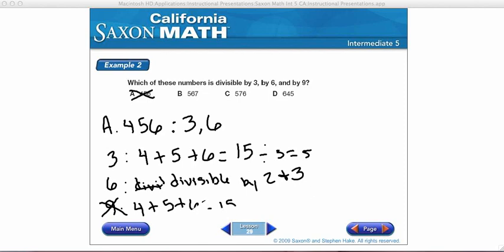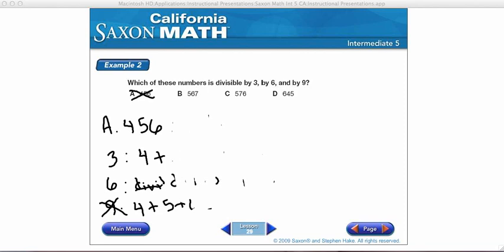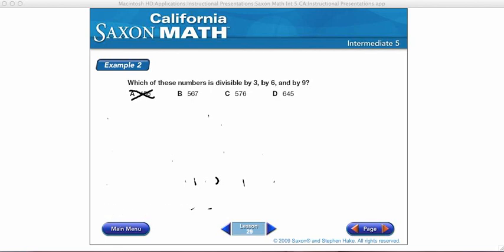Now we have to do the same process with the other numbers. Let's take B, 567. We're going to add up 5 plus 6 plus 7. 5 plus 6 is 11. 11 plus 7 is 18. 18 is divisible by 3, so 3 is a factor.